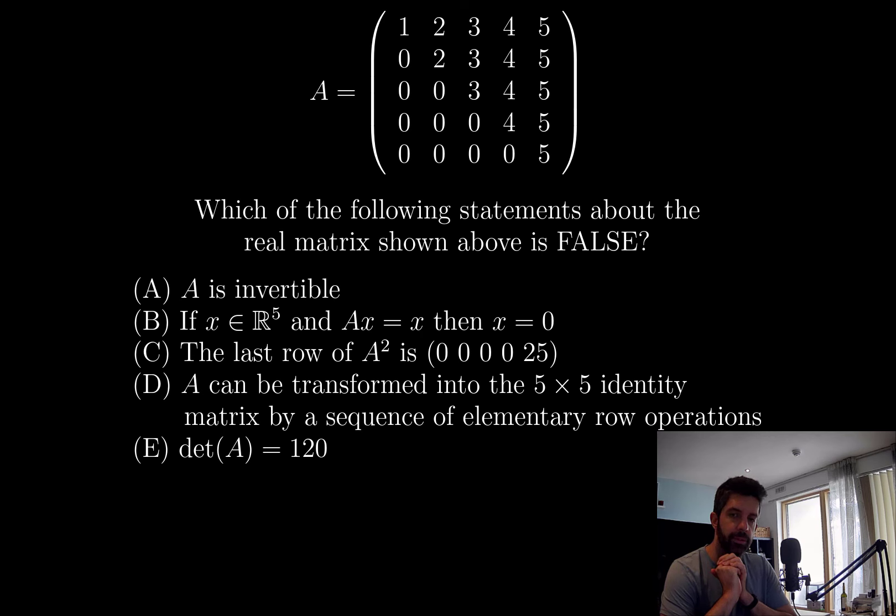If x is in R⁵ and Ax equals x, then x equals 0. So that is also correct because A is invertible. That's a true statement.